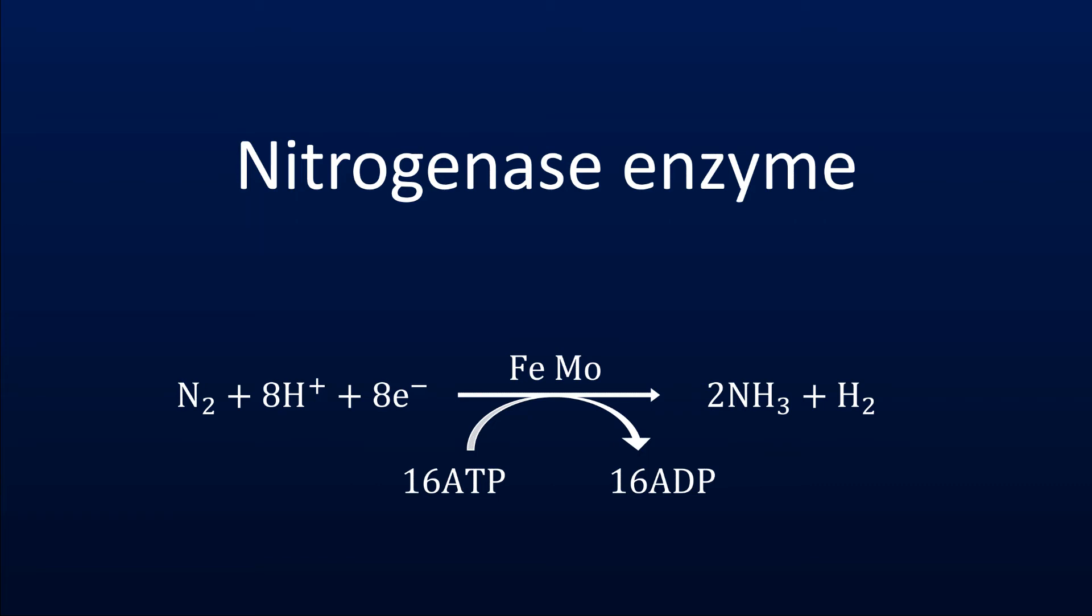The energy required to break the N2 triple bond is supplied in the form of ATP hydrolysis. The breaking of a bond of ATP is incredibly exothermic, and this energy is harnessed to twist the shape of the protein, allowing it to move electrons onto nitrogen. The key catalyst in this enzyme is also made of iron, plus another special metal called molybdenum.